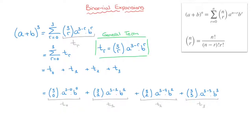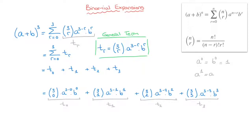But we cannot stop there — we need to simplify each of these four terms as much as possible. I like to start by simplifying the powers of a and b. Two results worth keeping in mind: first, a raised to the power of 0 or b raised to the power of 0 both equal 1, so any power of 0 can be completely ignored. Second, a raised to the power of 1 is simply a, and b raised to the power of 1 is simply b — we don't bother writing a power of 1.